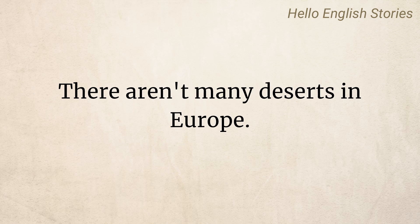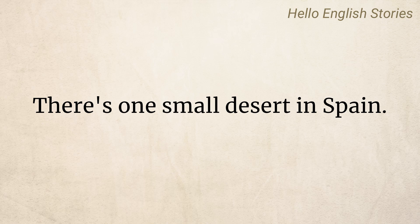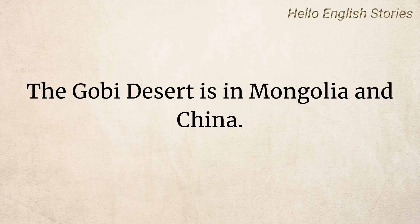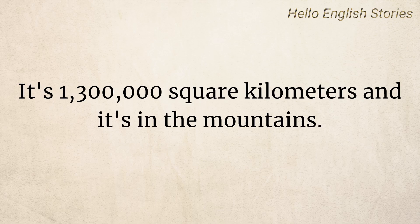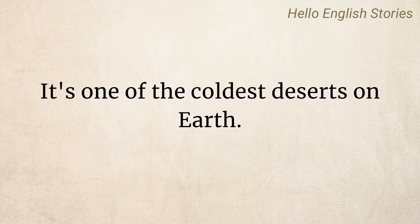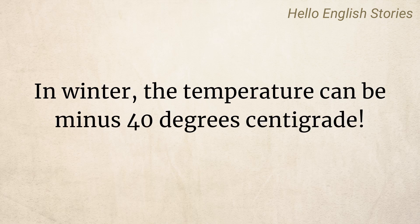There aren't many deserts in Europe. There's one small desert in Spain called the Tabernas Desert. The Gobi Desert is in Mongolia and China. It's 1,300,000 square kilometers and it's in the mountains. Most of the land is rock. It's one of the coldest deserts on Earth. In winter, the temperature can be minus 40 degrees centigrade.